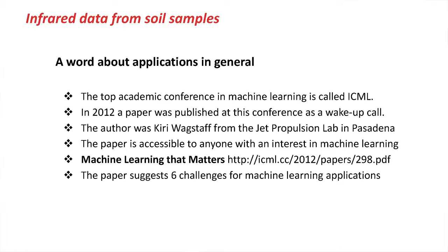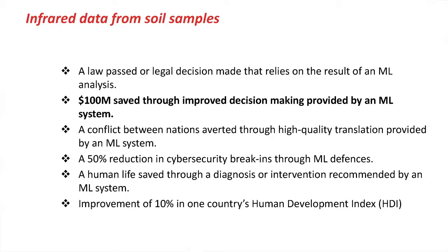The author was Kiri Wagstaff from the Jet Propulsion Lab in Pasadena, California, and the paper — accessible to anyone with an interest in machine learning — is called "Machine Learning That Matters." The URL on the slide will enable you to download it. The paper points out that the field is focusing too much on new methods and their accuracy, and less on the kind of application that will really make a difference. Kiri suggested six challenges for machine learning applications, one of which is highlighted: one hundred million dollars saved through improved decision making provided by an ML system.